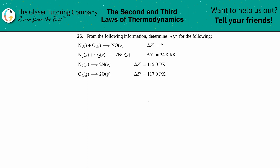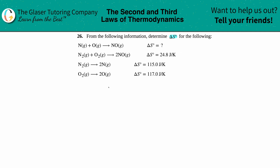Number 26: from the following information, determine the ΔS for the following reaction. We want to find the equation for N(g) + O(g) → NO(g) and determine the ΔS value — the change in entropy. We can't use appendix values; instead, we're given three different equations with ΔS values that we have to combine to find the equation we want. The target equation is already balanced.